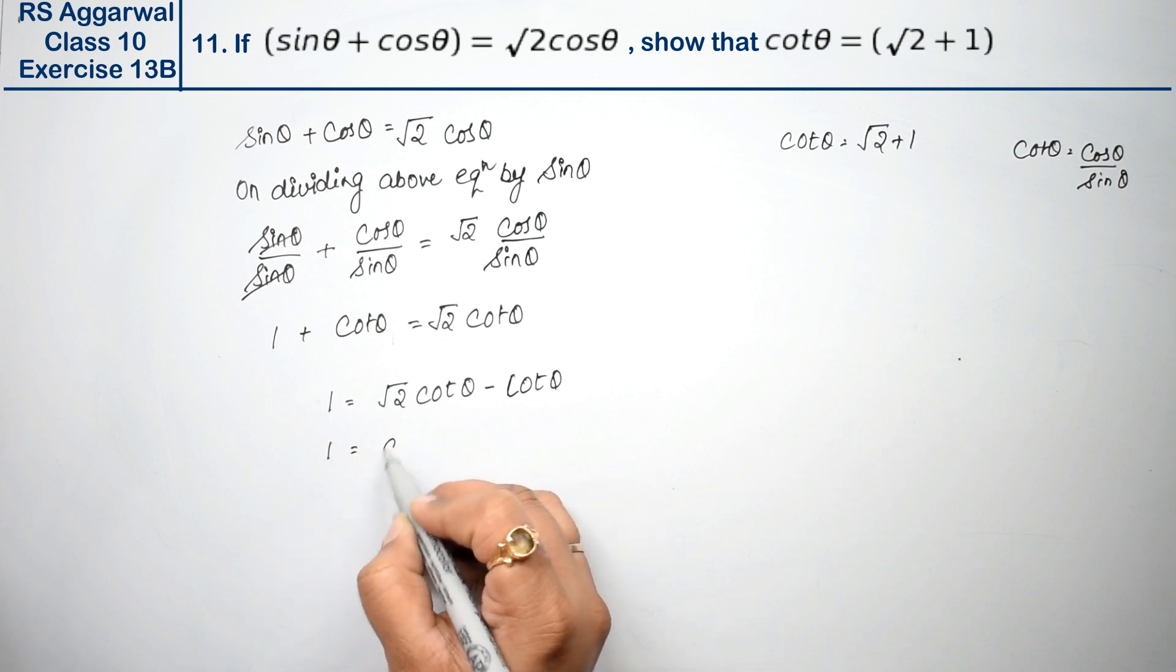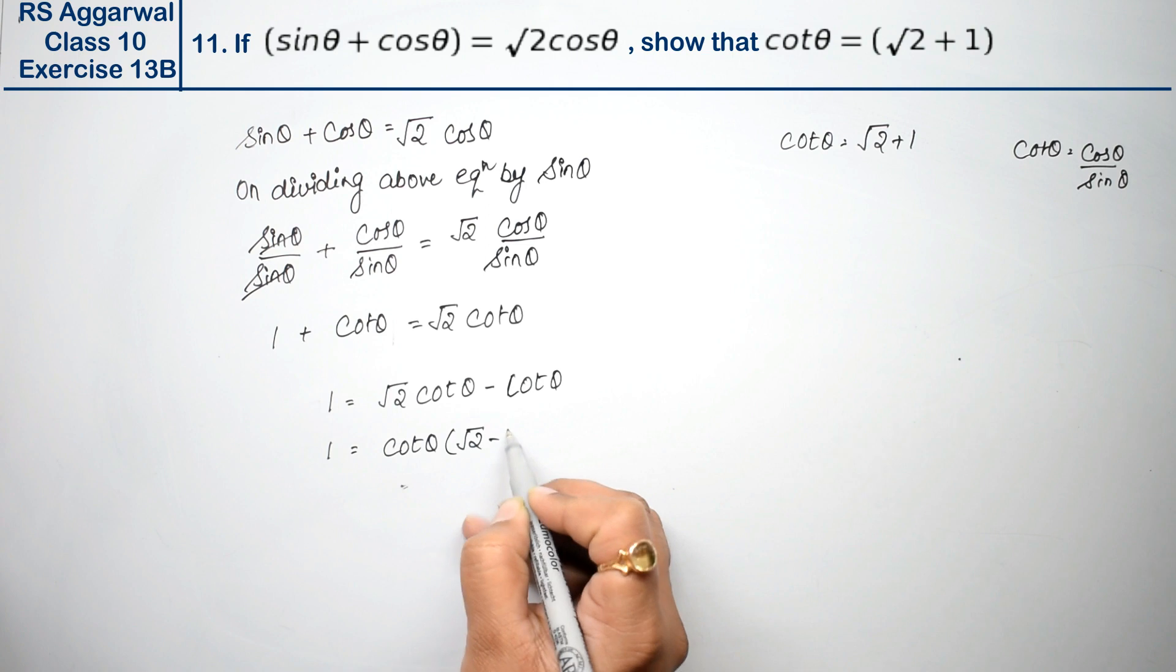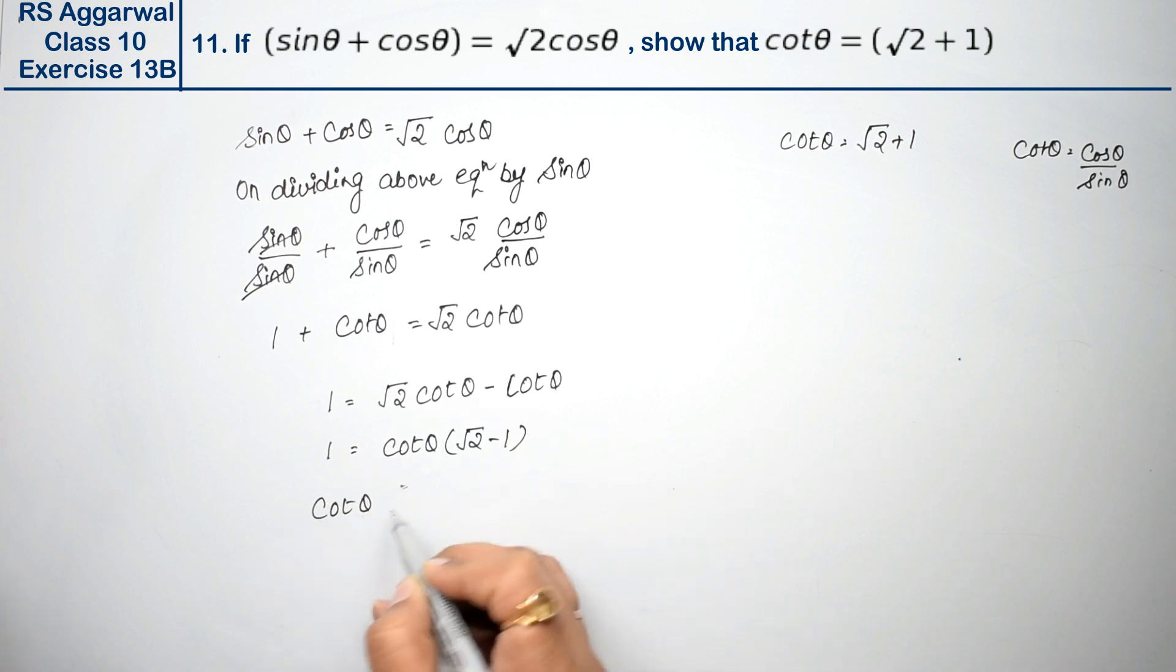1 equals cot theta common, so this is root 2 minus 1. So cot theta equals 1 upon root 2 minus 1.